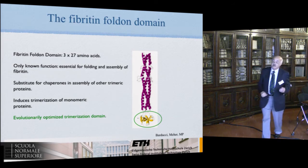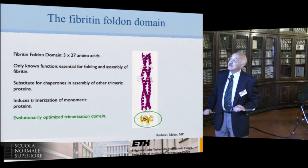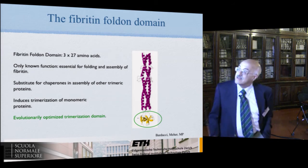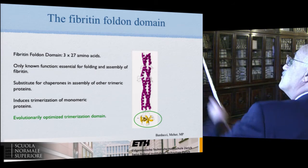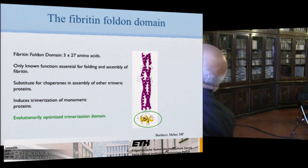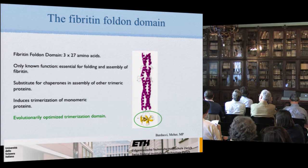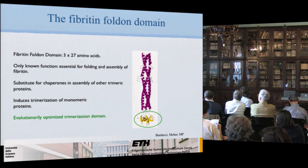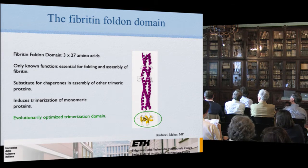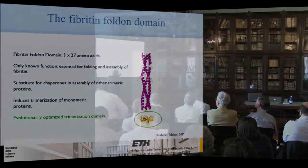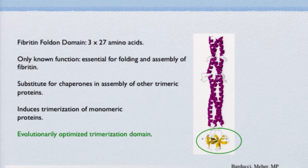So enough for the introduction. What we are going to look at is the fibritin fold-on domain. Fibritin is part of the muscle system, and it's a trimeric object. At the bottom of it, there is a group of three proteins which is the so-called fold-on domain. They assist the assembly of the fibritin fiber and act as a chaperone in many situations, helping the trimerization — every time they see three proteins, they tend to assemble them together.